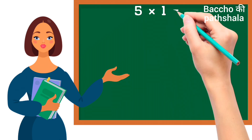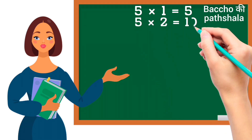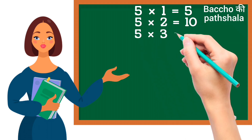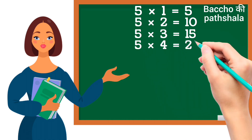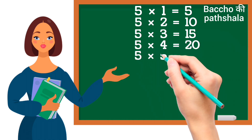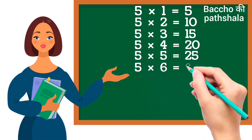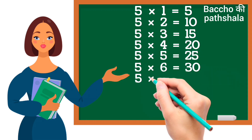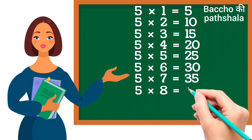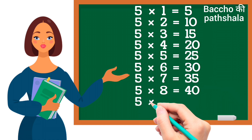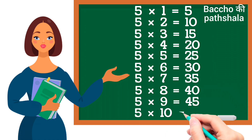Five ones are five. Five twos are ten. Five threes are fifteen. Five fours are twenty. Five fives are twenty-five. Five sixes are thirty. Five sevens are thirty-five. Five eights are forty. Five nines are forty-five. Five tens are fifty.